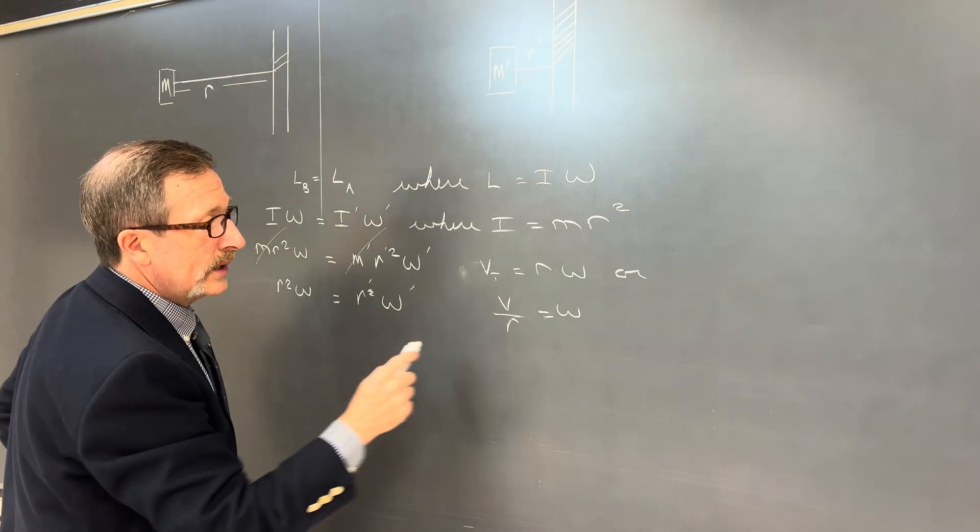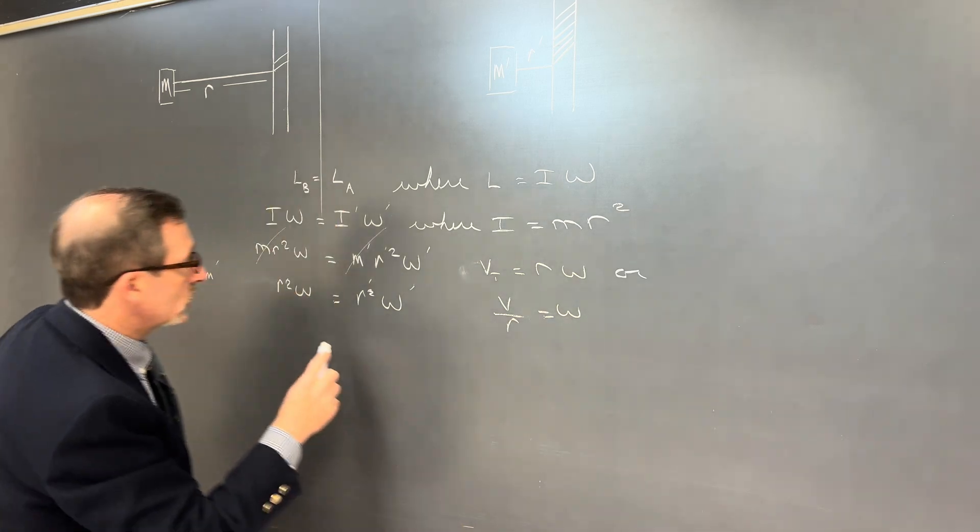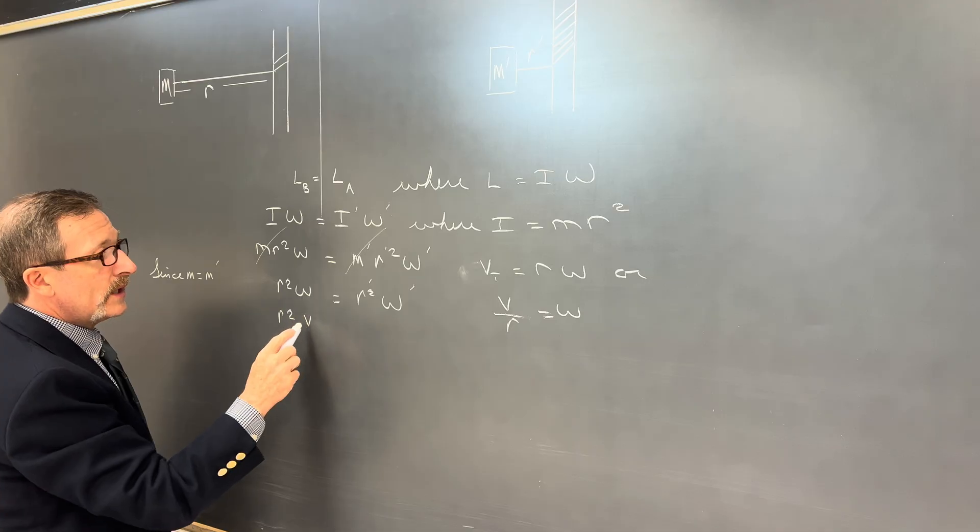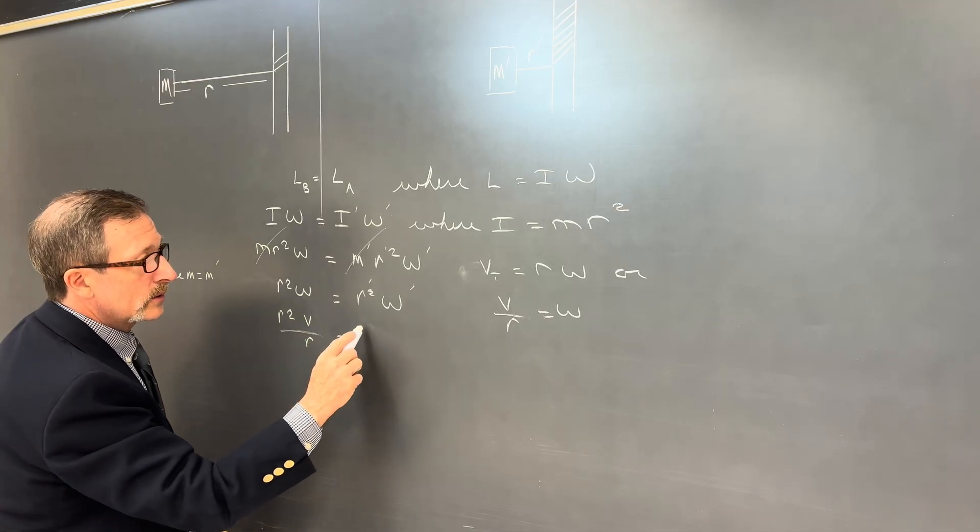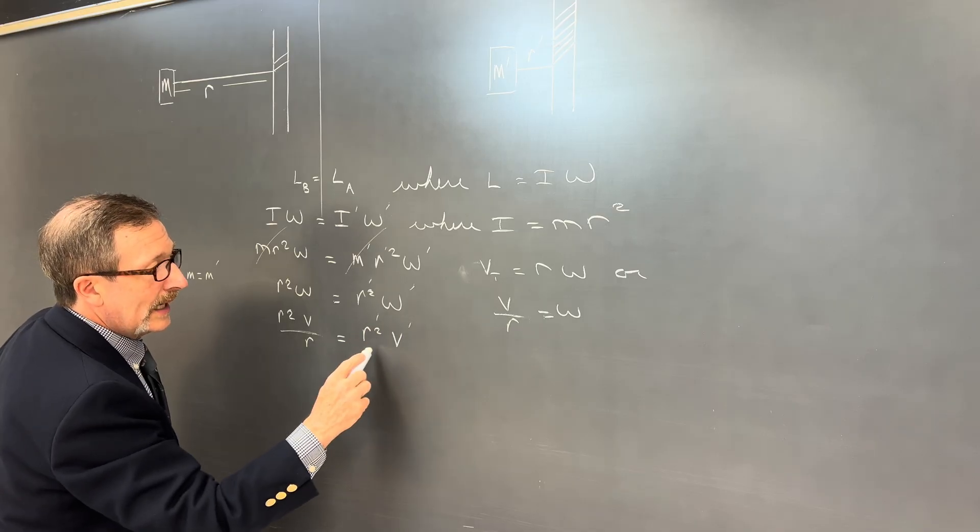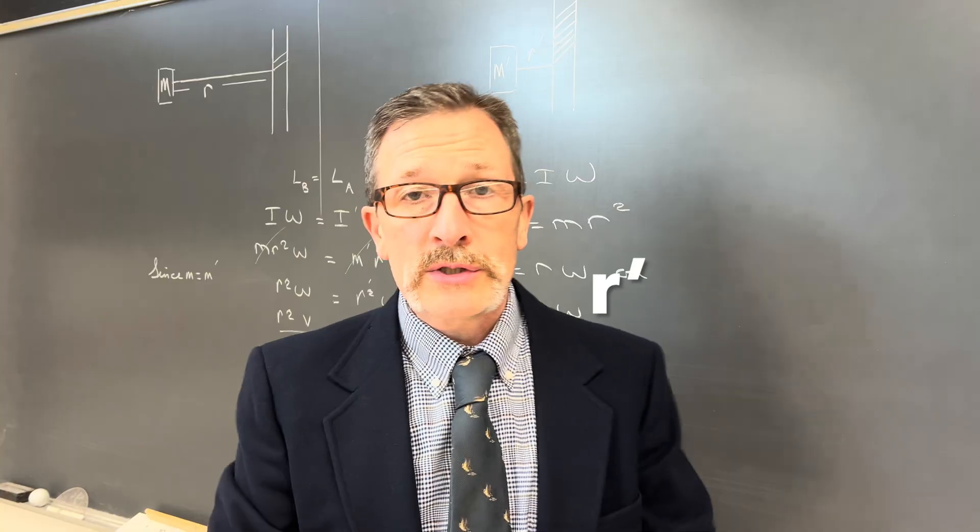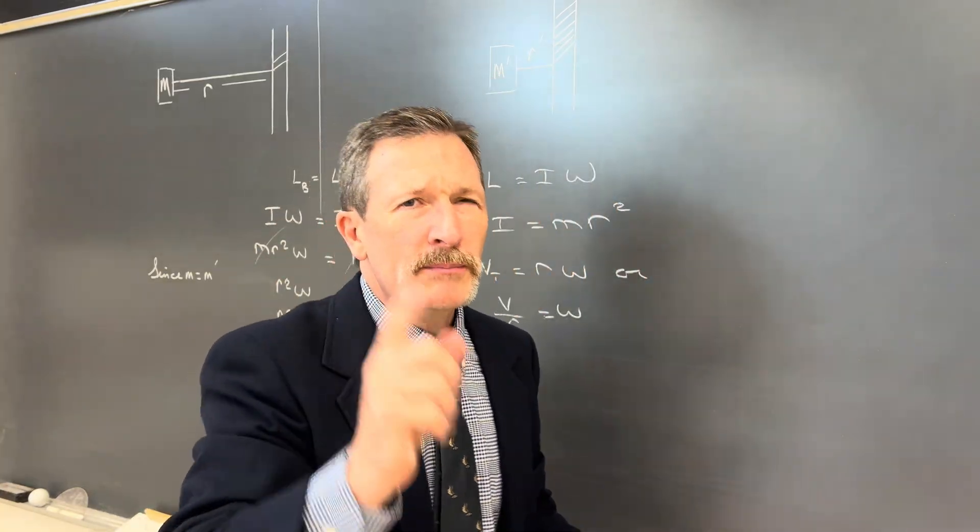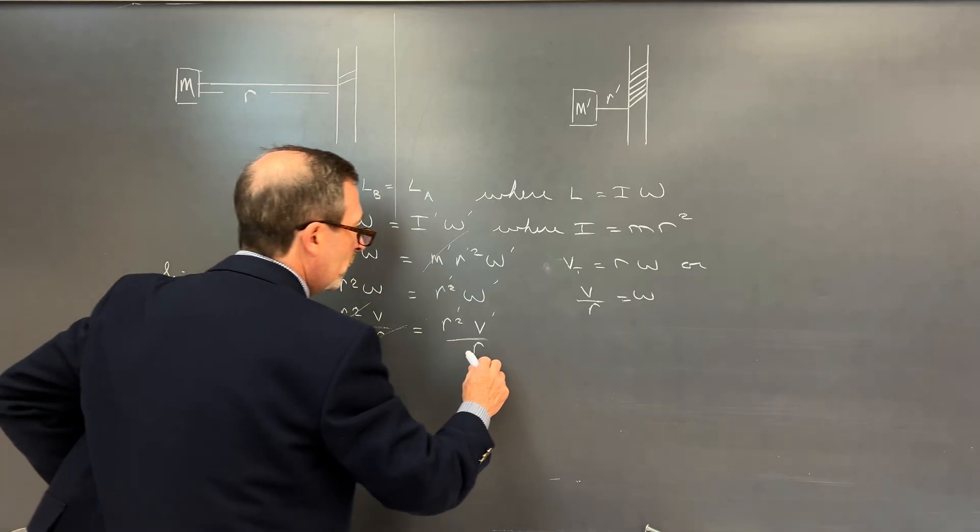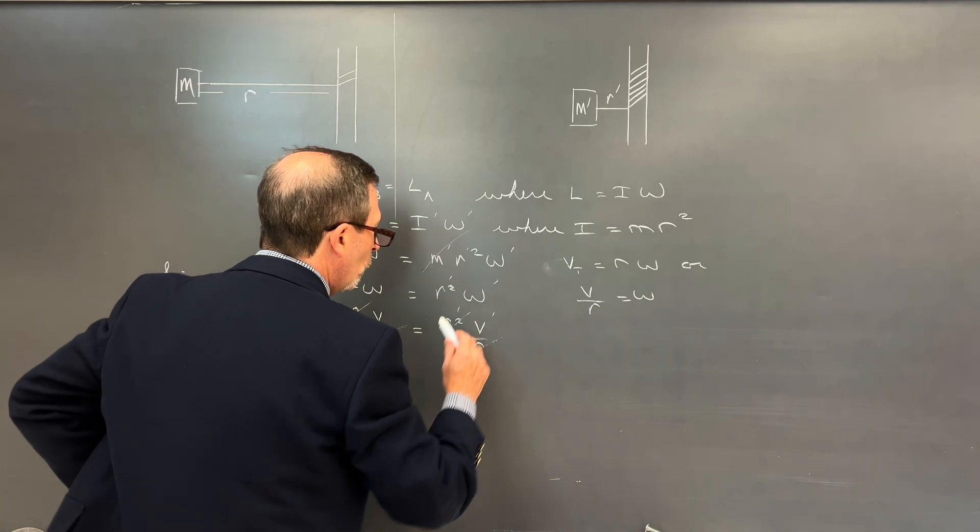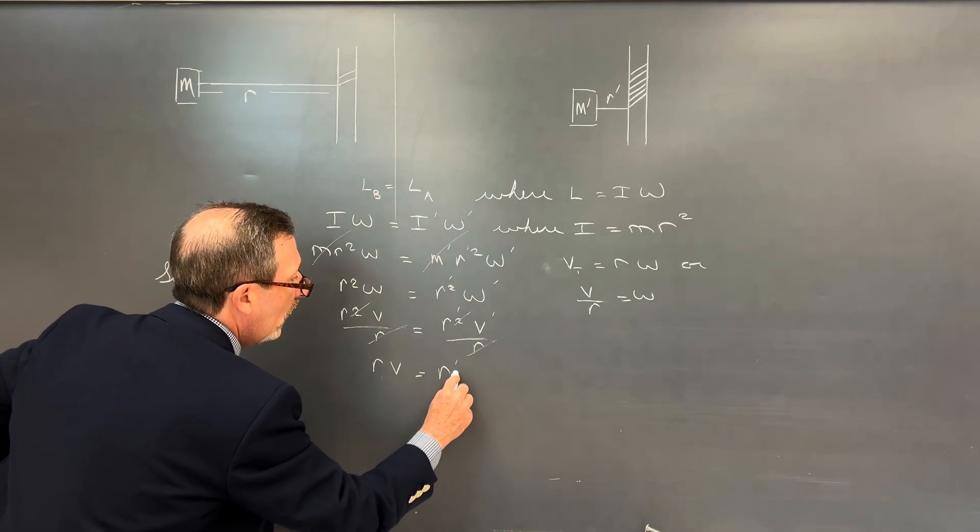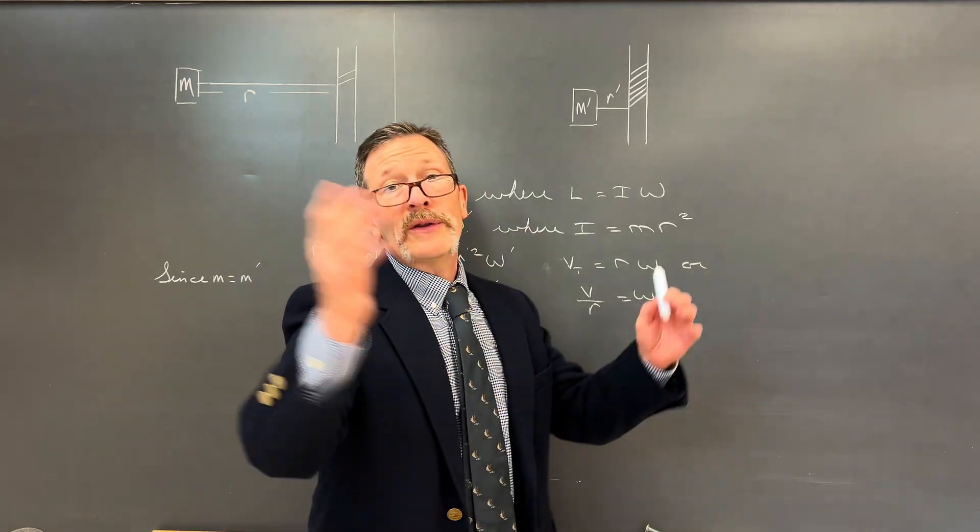And now we can plug in our v and our r. So I can end up saying my omega is going to be r squared. That would be v all over r equals r squared. And that's an after. And omega would be velocity after all over r. Some of your students will be able to see this right away and they'll know the answer. But most are still going to struggle. They'll say, well, one of these r's can cross out with one of those r's. That r can cross out with one of those. So I'm going to end up having r v equals r after v after.